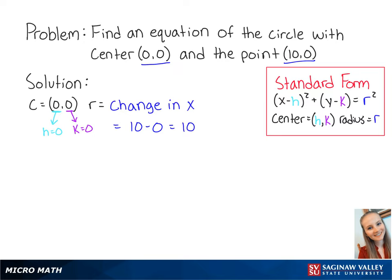Now that we have the center and the radius, we can write the equation as (x - 0)² + (y - 0)² = 10².